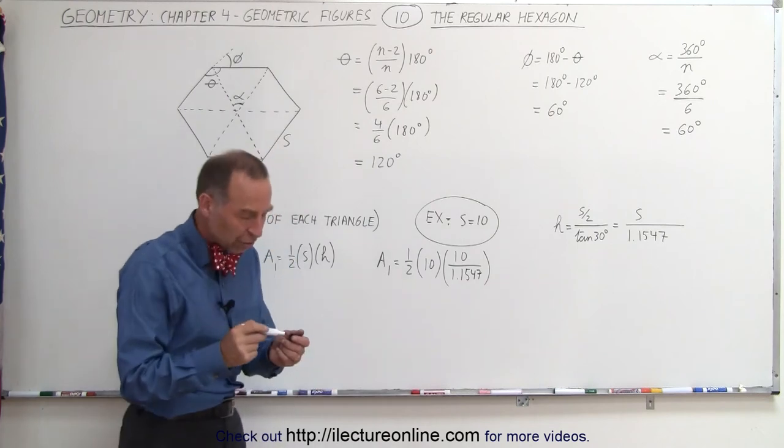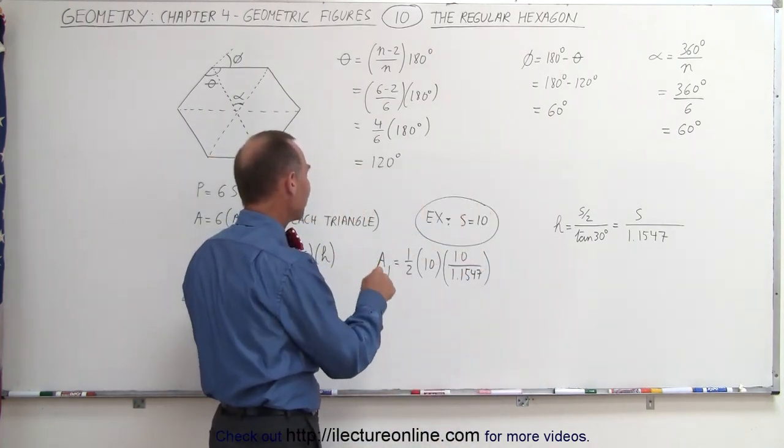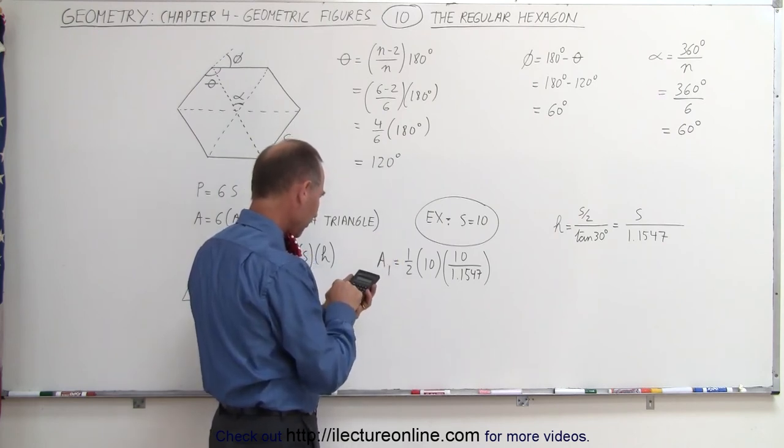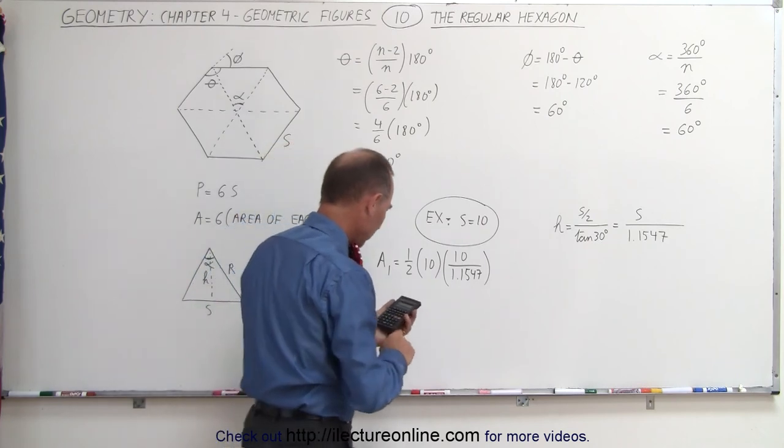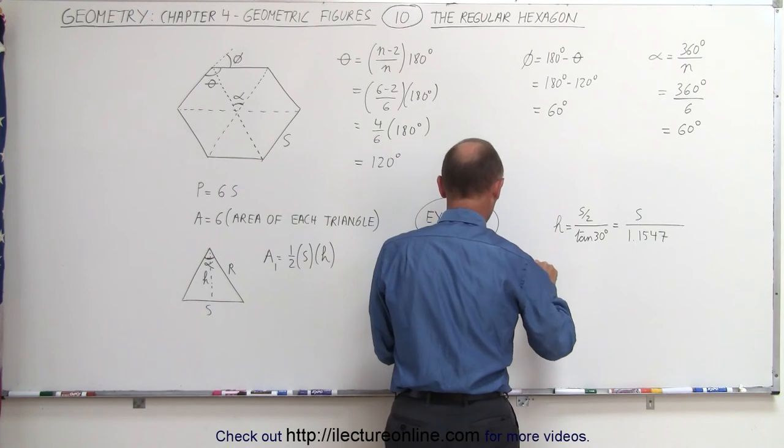This will be the area of each of the six triangles. So we get half times 10 is 5, times 10 is 50, so we get 50 divided by 1.1547. That would be equal to 43.3.